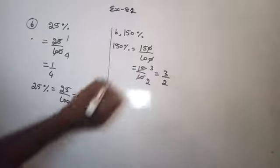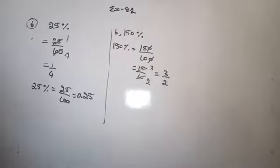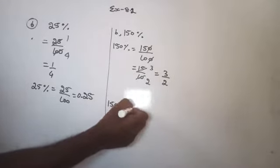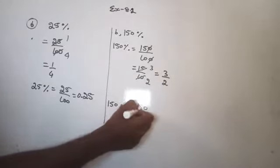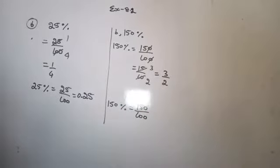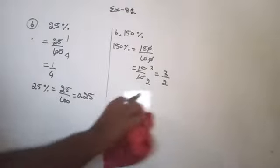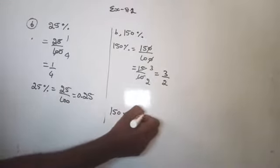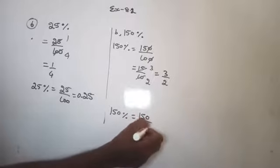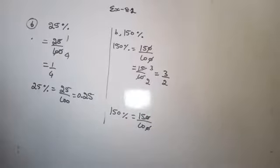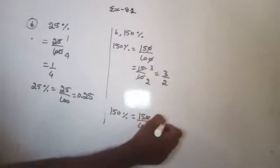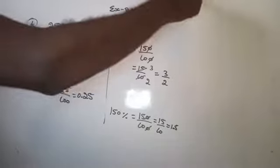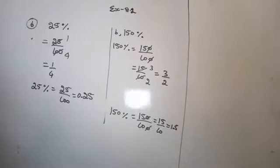Now express the given percentage into decimal. That is 150% equals 150/100. Strike out the equal number of zeros to get 15/10, which is equal to 1.5.